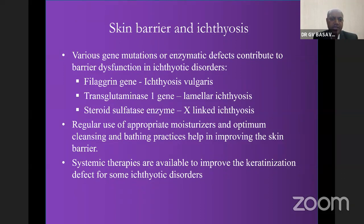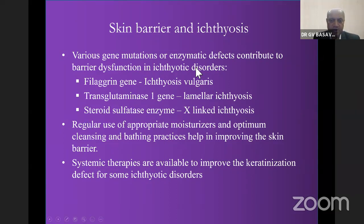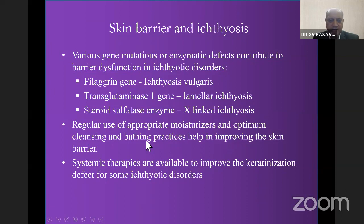In ichthyosis, various gene mutations or enzymatic defects contribute to skin barrier dysfunction — specifically, the filaggrin gene and transglutaminase 1 gene in lamellar ichthyosis, and steroid sulfatase enzyme in X-linked ichthyosis. Regular use of appropriate moisturizers and optimum cleansing and bathing practices help improve the skin barrier. Systemic therapies are available to improve keratinization defects for some ichthyotic disorders.